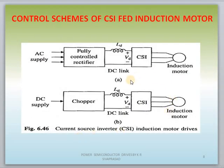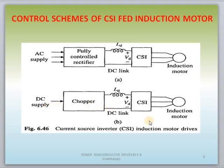Next are the control schemes of CSI fed induction motor drive. These two control schemes depend upon the type of input supply available. If an AC supply is available, you use a controlled rectifier to convert AC to DC, then process it through the DC link to the CSI fed induction motor drive. If a DC supply is available, use a chopper to convert fixed DC to variable DC, processed through the DC link to the CSI fed drive.